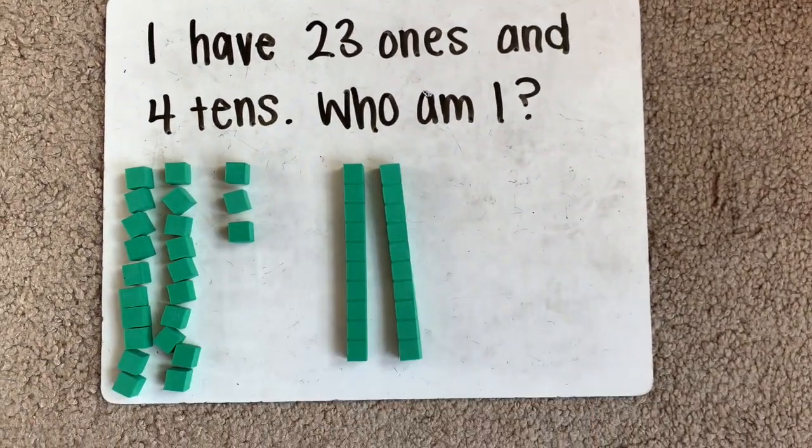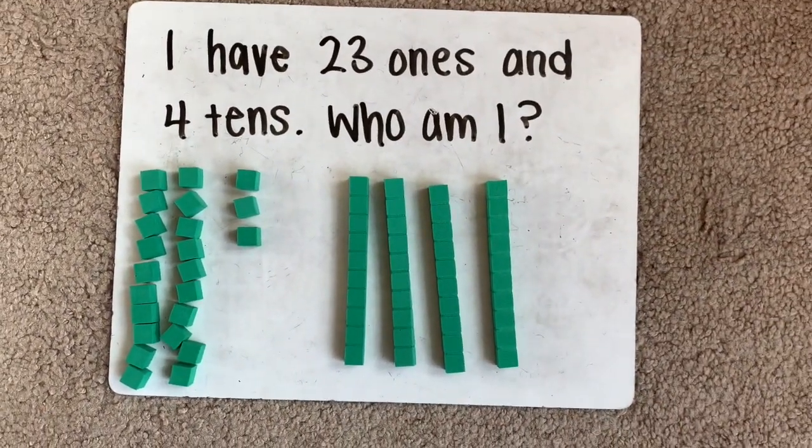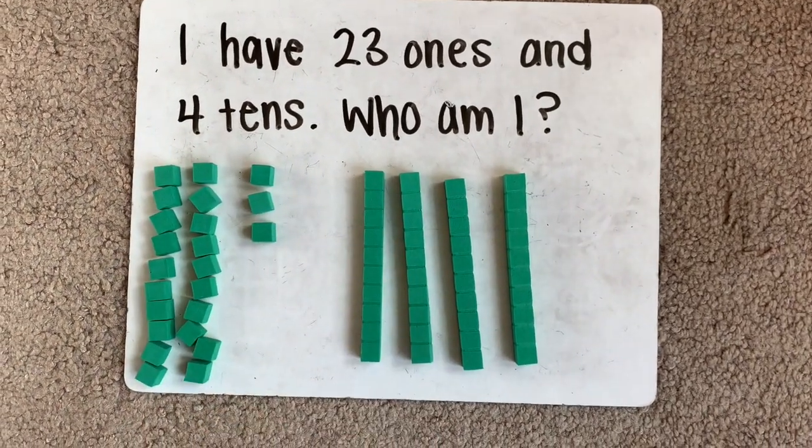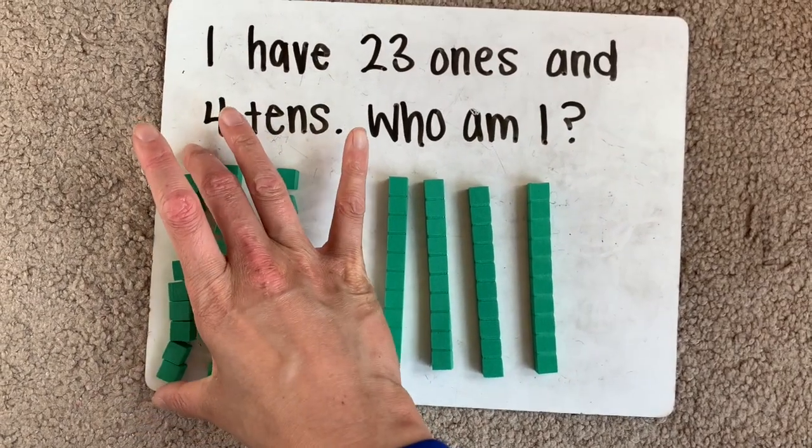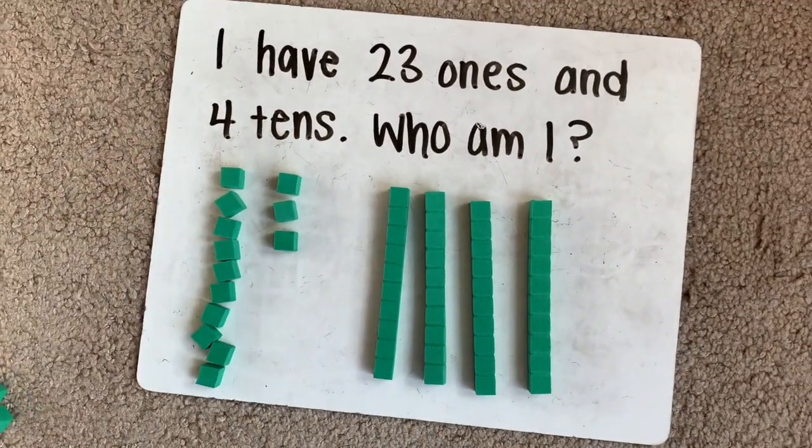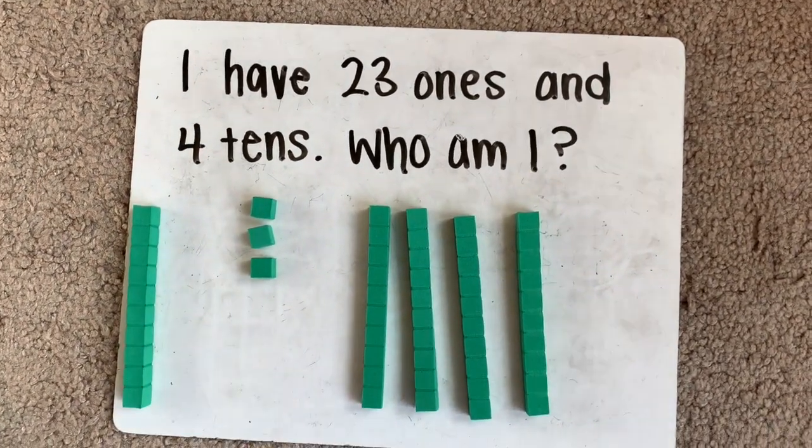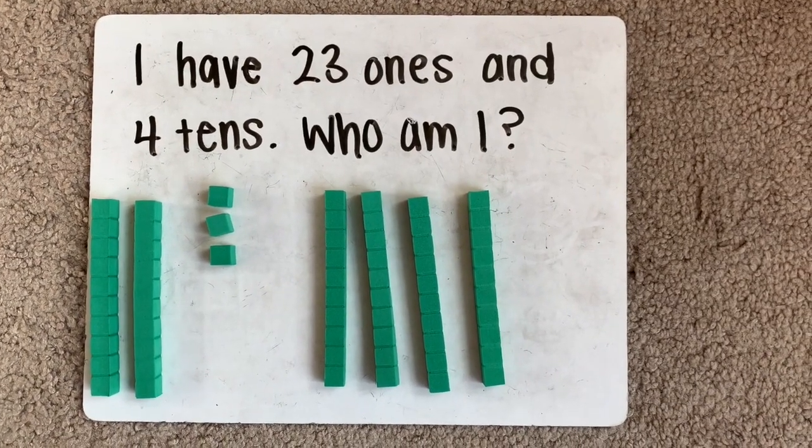1, 2, 3, 4. I noticed that there are two tens in 23. Instead of all these ones cubes, I can switch them. Switch out this 10 for a 10 stick. Switch out this 10 for a 10 stick. And that's the same, right?